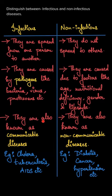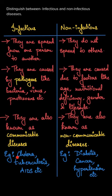Infectious diseases are also known as communicable diseases, and non-infectious diseases are also known as non-communicable diseases. Examples of infectious diseases are cholera, tuberculosis, AIDS, etc. And examples of non-infectious diseases are diabetes, cancer, hypertension, etc.